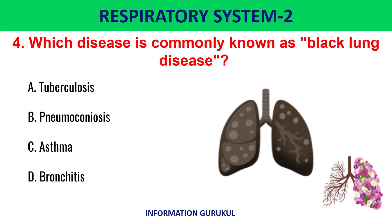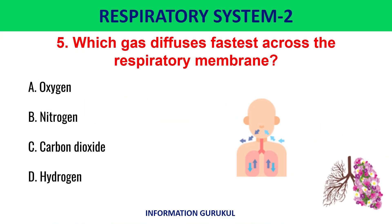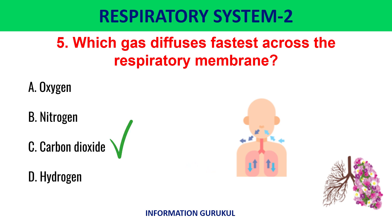Which disease is commonly known as black lung disease? Pneumoconiosis. Which gas diffuses fastest across the respiratory membrane? Carbon dioxide.